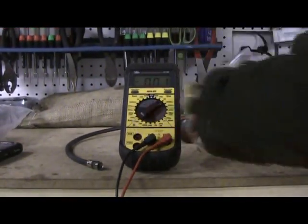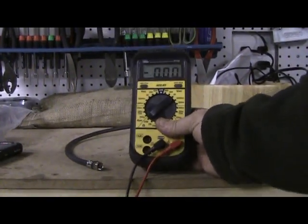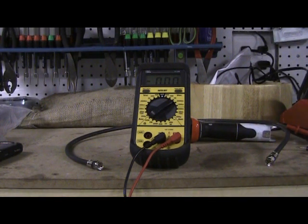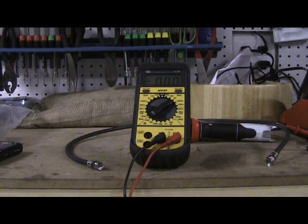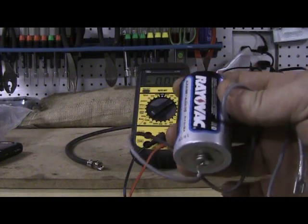The first thing we'll do is we'll check the direct current. We're going to put it on 20 VDC, direct current, since we know we're going to check a battery that's going to have less than 20 volts. The battery we'll check will be this D battery that I showed you how to check speaker polarity on.